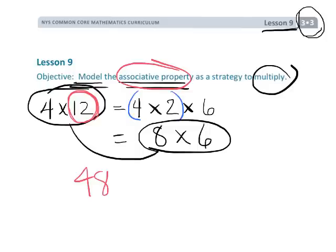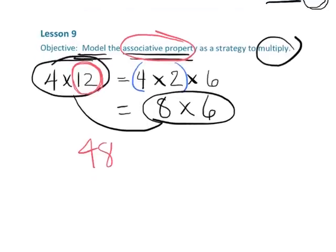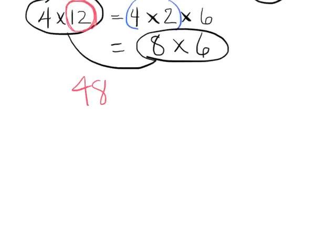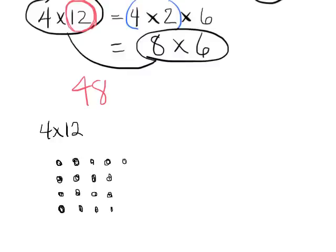We're not just making this up out of numbers. We can also model this using an array. I'm going to model 4 times 12. The idea is we're going to have 4 rows and 12 columns. I'm going to speed this up through the magic of video and get all 12 columns going.